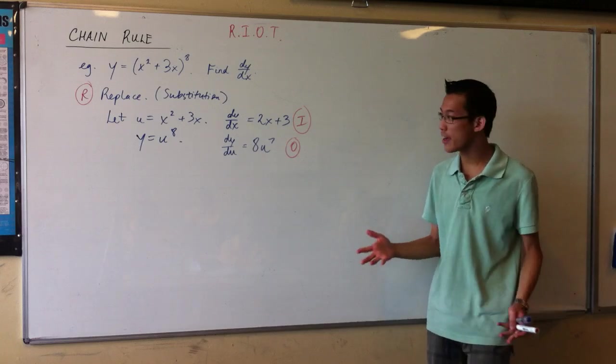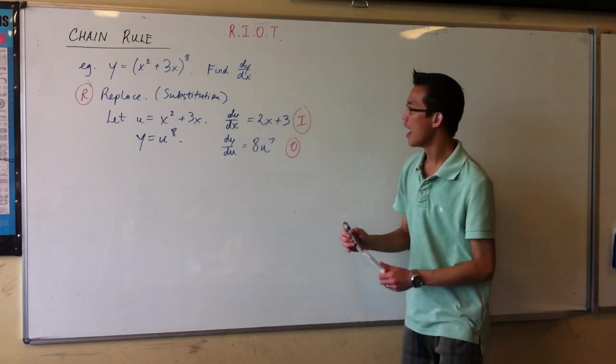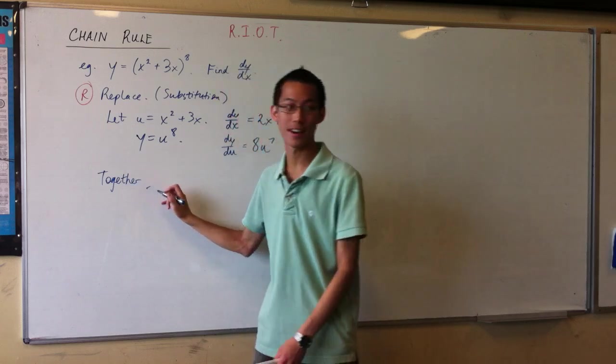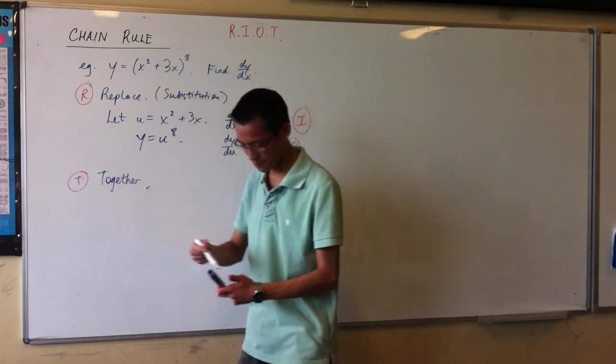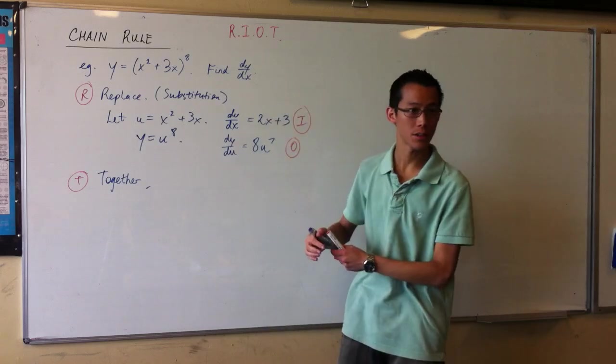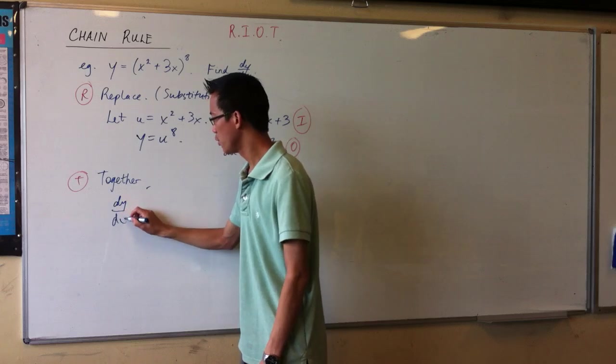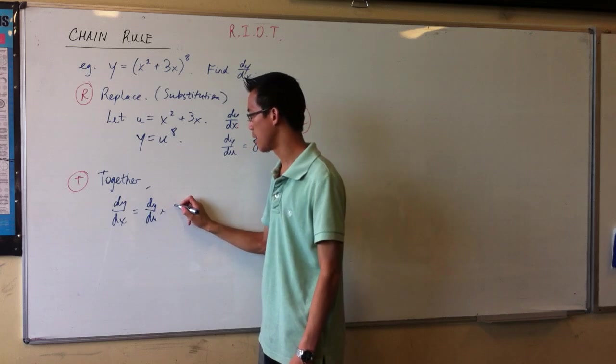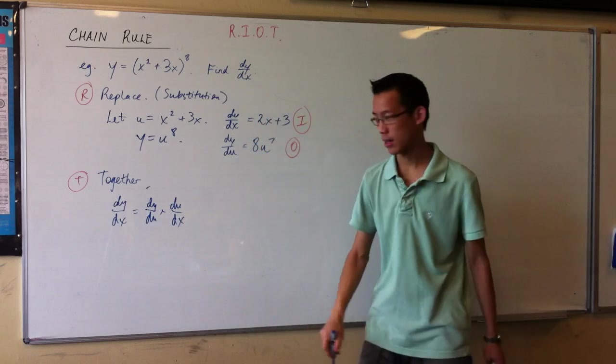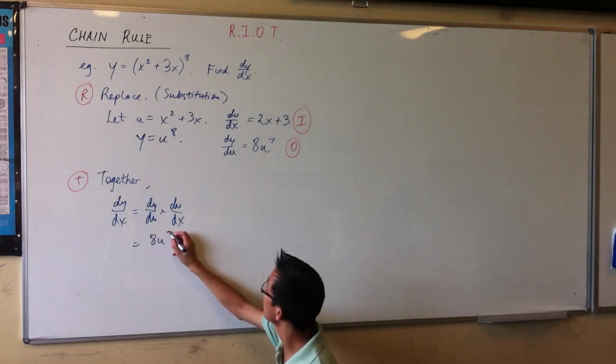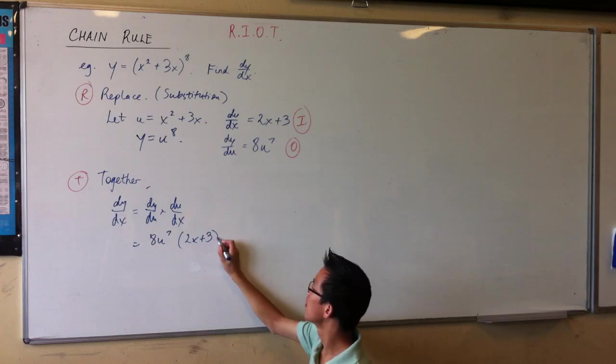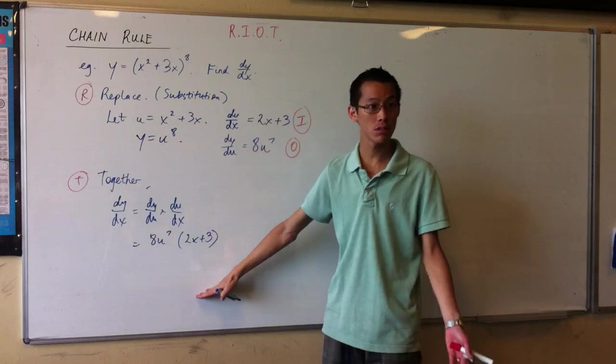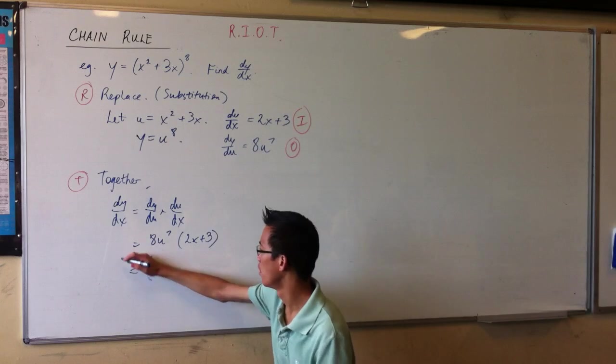Now, what's my last step? This is where the chain of the chain rule comes in. I've got my two derivatives, and what I want to do is put them together. So there's my T. What does the chain look like? You take the derivative that you're after, dy/dx. And then you string together the other derivatives you've got in that chain. There, dy/du times du/dx. So that's going to be 8u to the 7th times 2x plus 3. And then, you remember, we introduced u to help us solve the question, but we don't actually want u in our solution. So therefore, I'll substitute it back in for what it actually is.